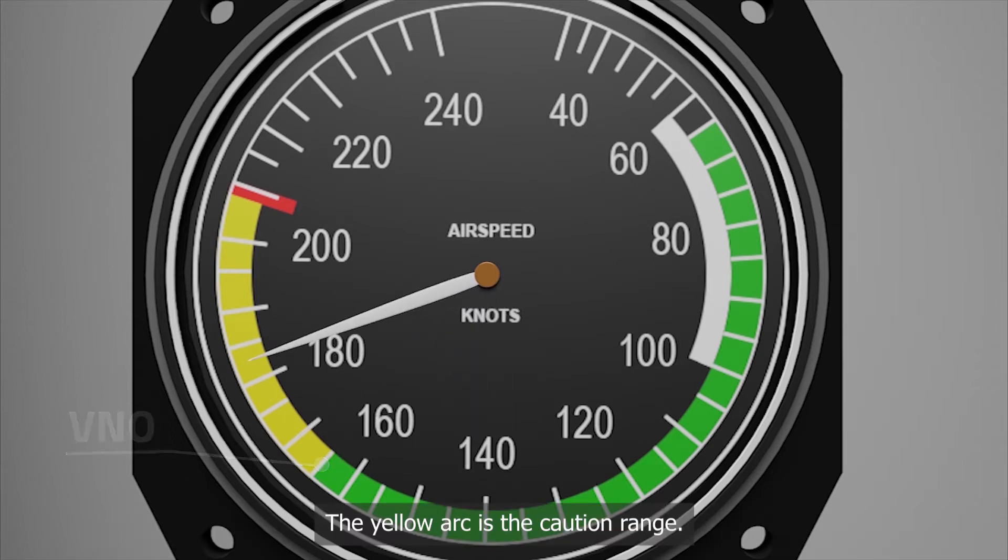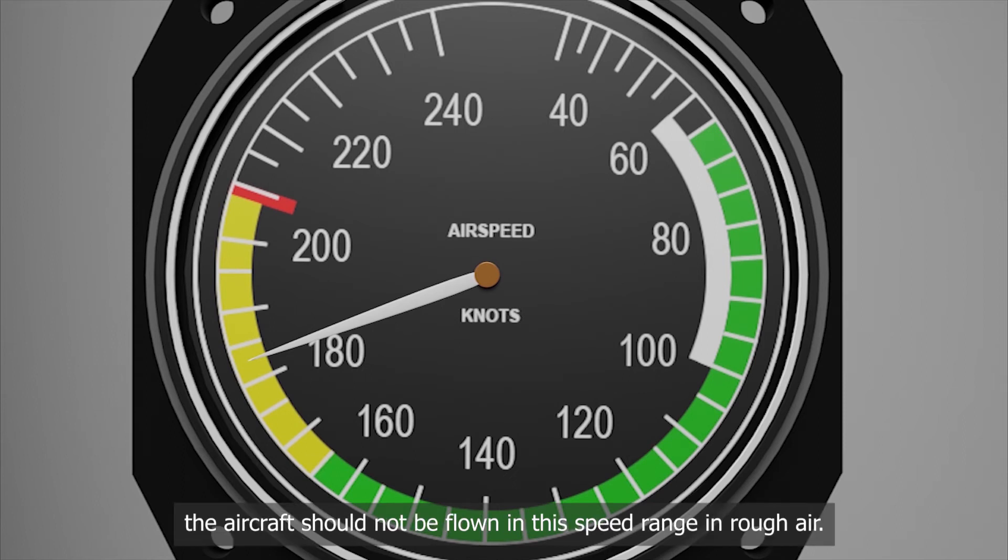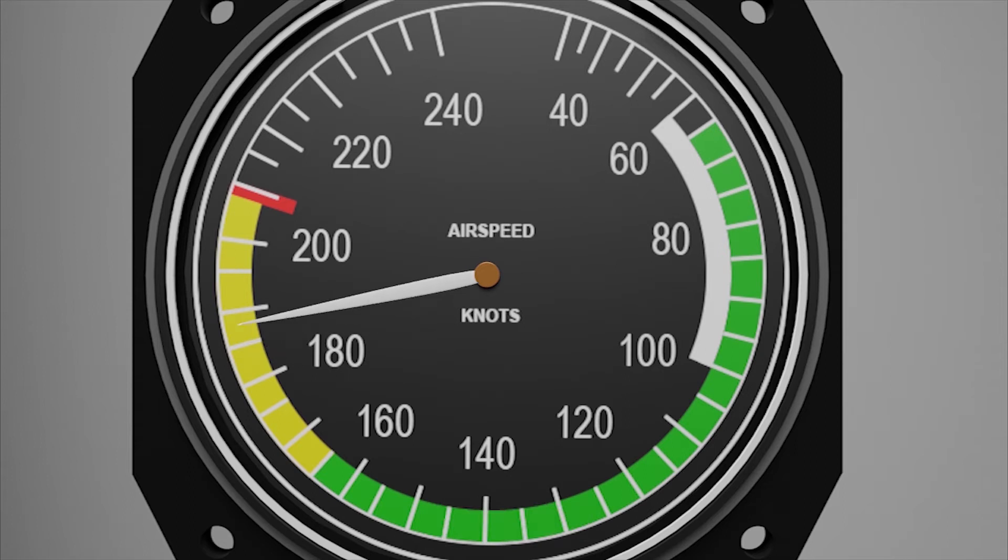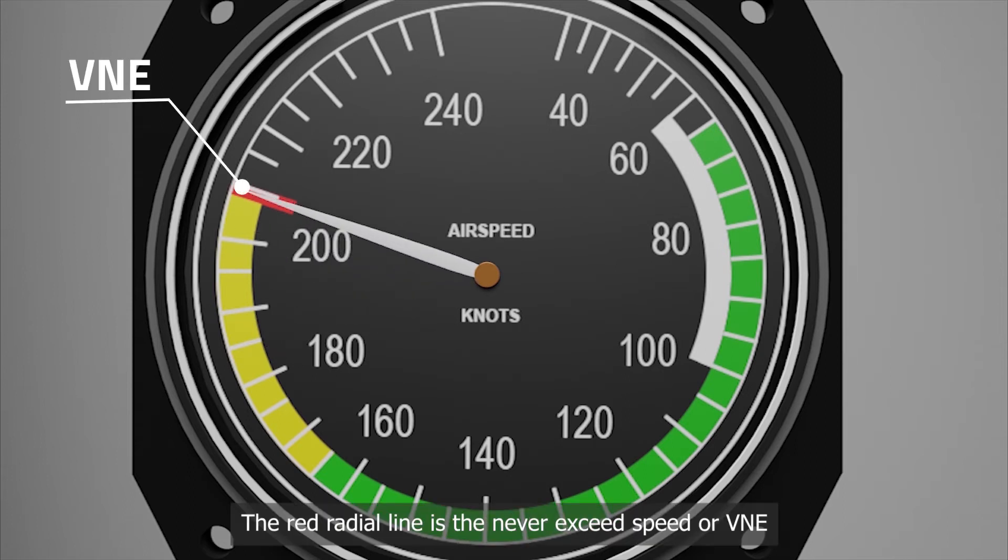The yellow arc is the caution range. The aircraft should not be flown in this speed range in rough air. The yellow arc extends from the top of the green arc to the red line. Red radial line. The red radial line is the never exceed speed or VNE.